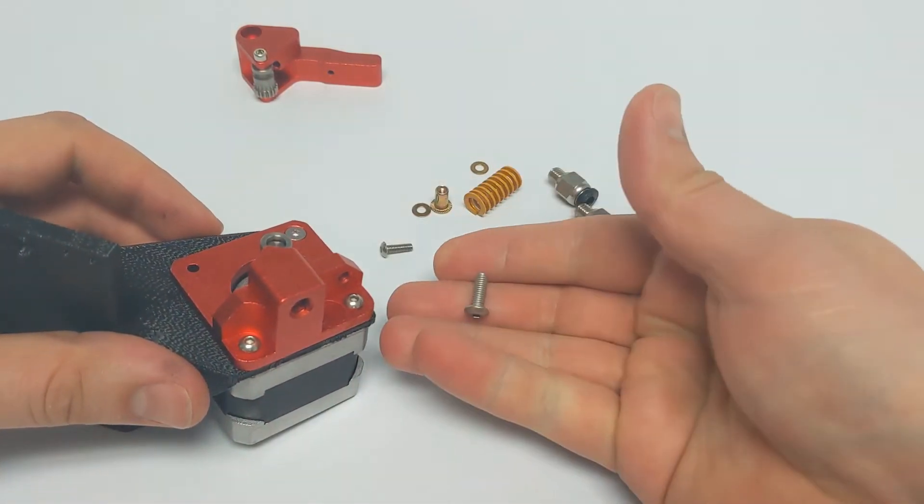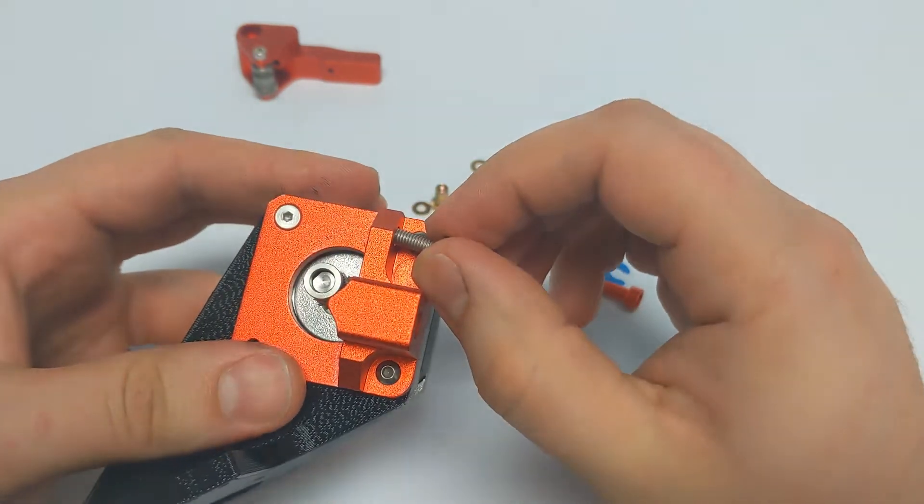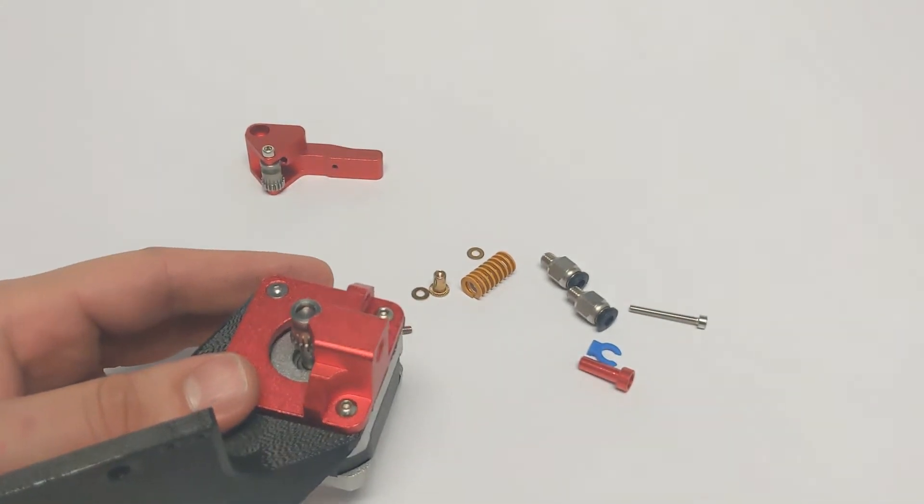Next, attach an M4 screw to the bottom of the base plate. Place the spring cap on top of the M4 screw. This will be used to adjust the tension of the extruder later on.